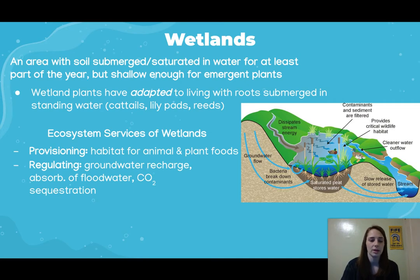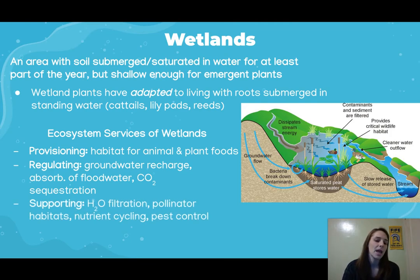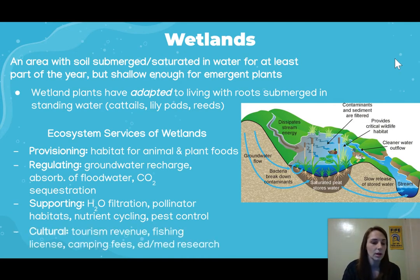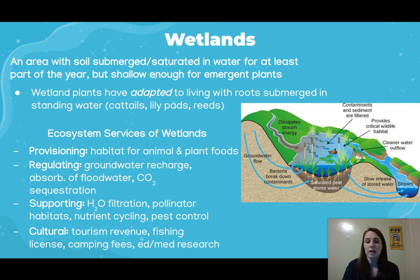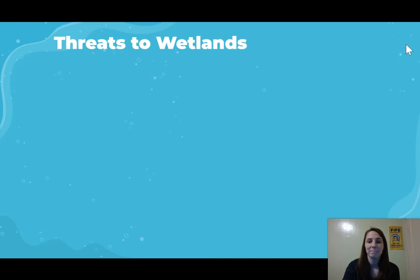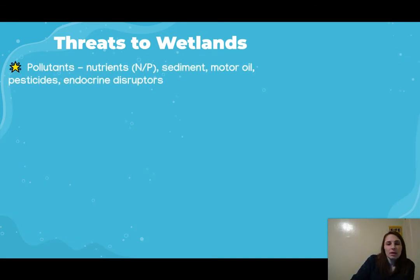For regulating services, wetlands do things like groundwater recharge, absorption of floodwaters, and carbon dioxide sequestration. Supporting services include water filtration, habitat for pollinators, nutrient cycling, and pest control. Cultural ecosystem services include tourism revenue, fishing licenses, camping fees, and educational and medical research involving organisms found in wetlands.